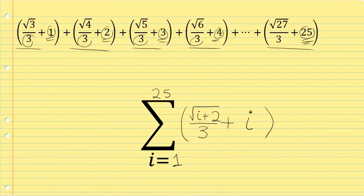In the first term, when i is 1, this would represent 1 plus 2, the square root of 3. In the last term, when i is 25, i plus 2 would be 25 plus 2, 27. This fits the pattern.